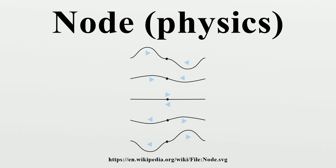In a standing wave, the nodes are a series of locations at equally spaced intervals where the wave amplitude is zero. At these points the two waves add with opposite phase and cancel each other out. They occur at intervals of half a wavelength. Midway between each pair of nodes are locations where the amplitude is maximum — these are called the anti-nodes. At these points the two waves add with the same phase and reinforce each other.